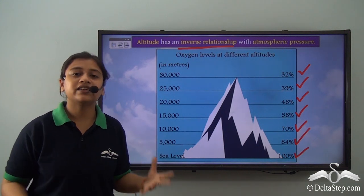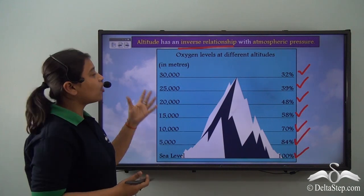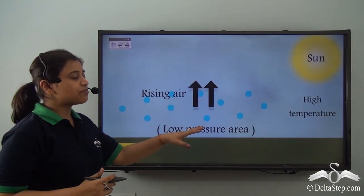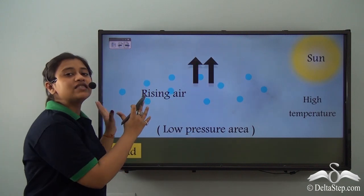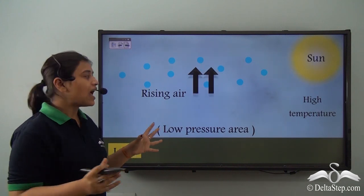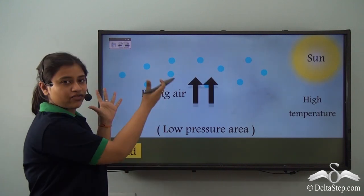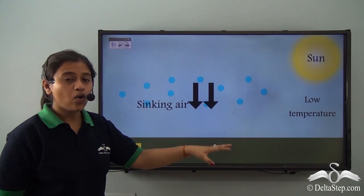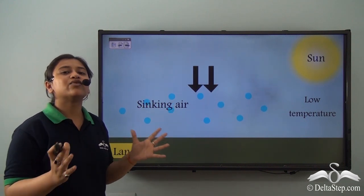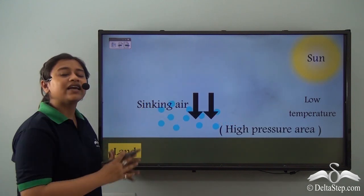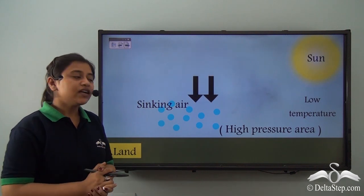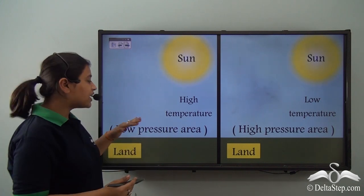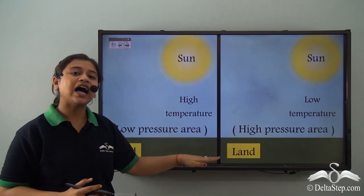Atmospheric pressure has an inverse relationship with altitude. Now, in land areas where temperatures are very high, molecules tend to move away from each other — the space between them increases, they become less dense, and rise above, creating a low pressure area. In regions where temperatures are very low, the spaces between molecules decrease, they become more dense, and sink down, creating a high pressure area. So higher temperatures mean a low pressure area, and lower temperatures mean a high pressure area.